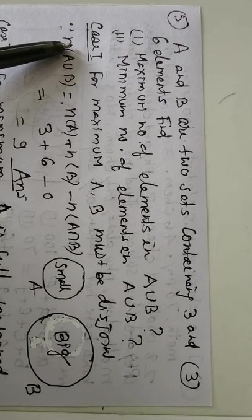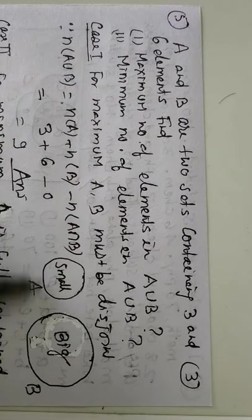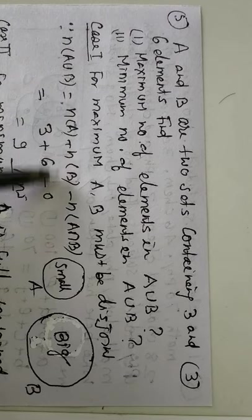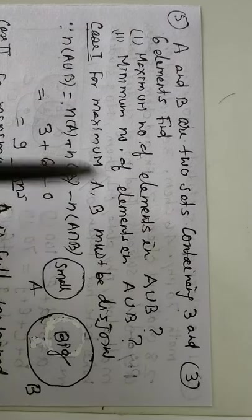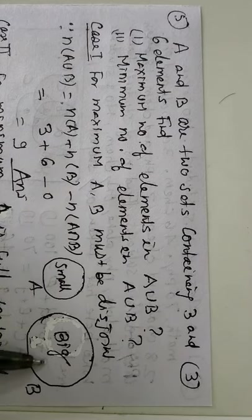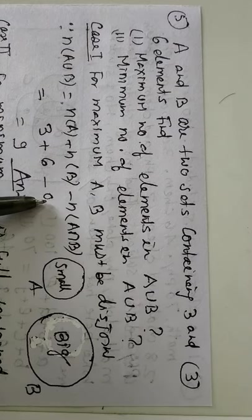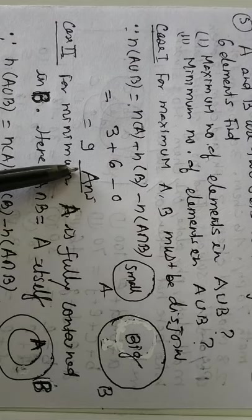There is case 1, when both sets are disjoint. And using the formula this, NA 3 given already, NB 6 already. And if the sets are disjoint, this intersection will be 0. So the answer is 9. So the maximum is 9.